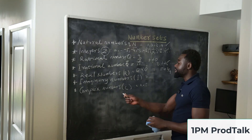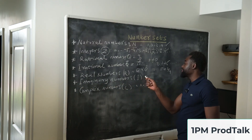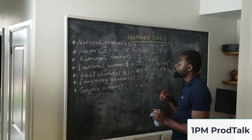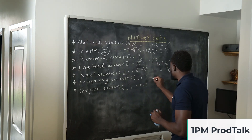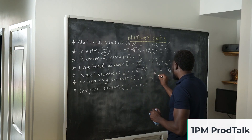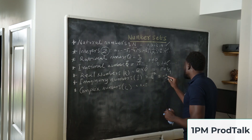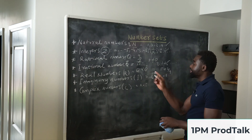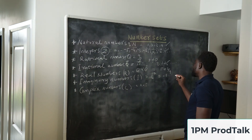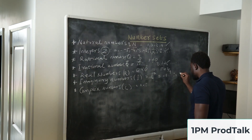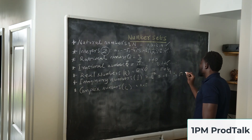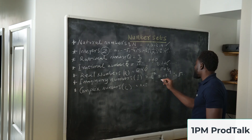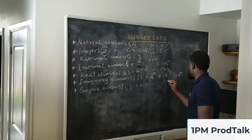The next thing is imaginary numbers, and the symbol is I. Imaginary numbers are any numbers that, when you square them, you get a negative value. For example, if we square I, we get negative 1. This is the same as I equals the square root of negative 1, which is not the same as the square root of 2 because that won't give a negative value.